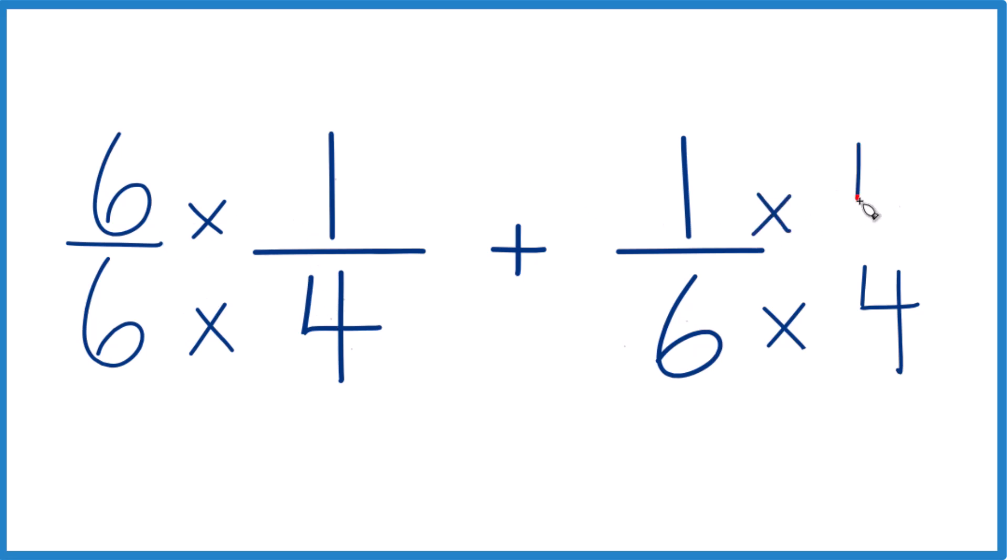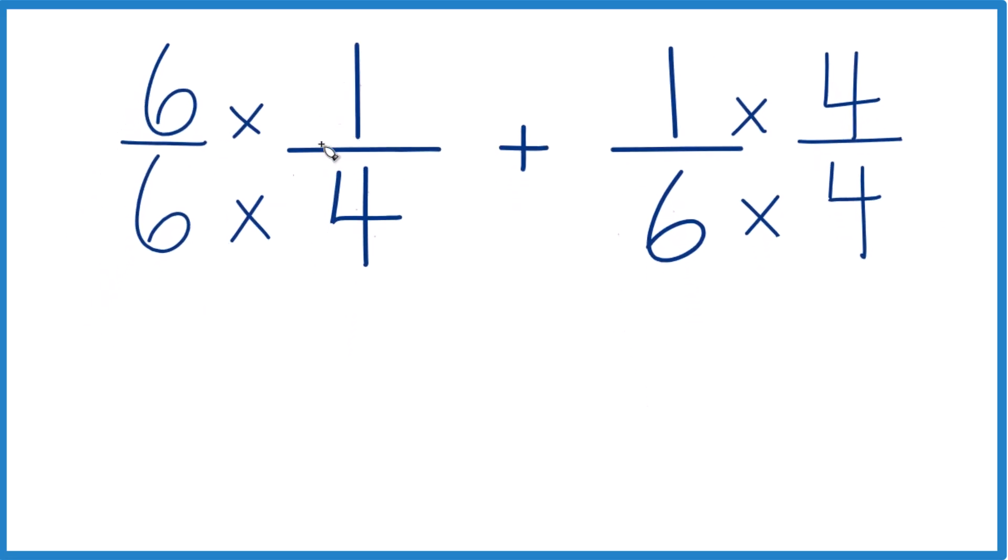Over here we'll multiply by four, so we have four over four. But now six times one is six, six times four is 24. And then here one times four is four and six times four, that's 24.